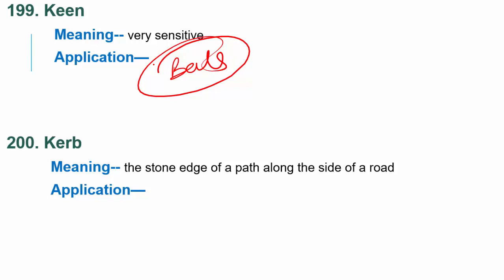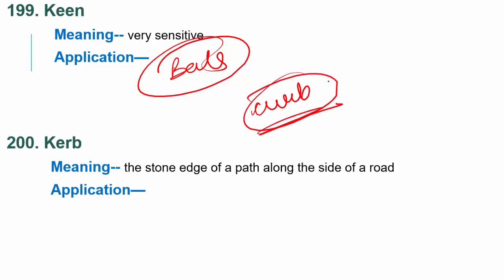Next word is curb, spelled C-U-R-B. Curb is the stone edge of a path along the side of the road. Road ke side mein pathron ka ek path bana diya hota hai — aajkal to footpath rehte hai, us type ka hi ho gaya. Lagan pathron ka ek path bana diya, usko hum bolte hai curb. The child was sitting on the curb while waiting for his mother. Meaning aur pronunciation pe zyada focus dena hai — jaise K-E-R-B aur C-U-R-B ke meanings mein difference pata hona chahiye.